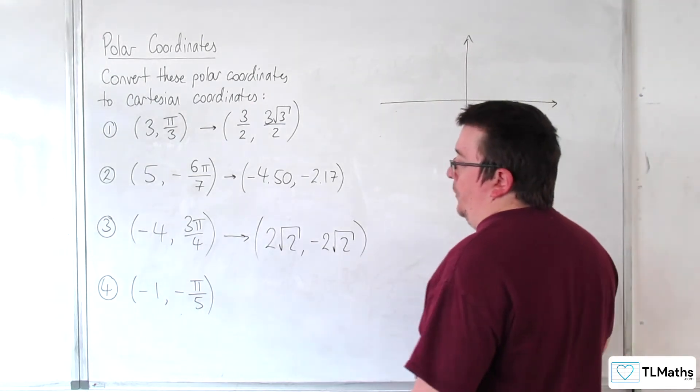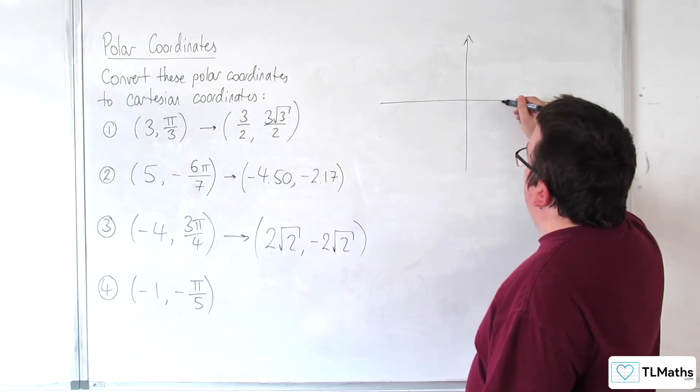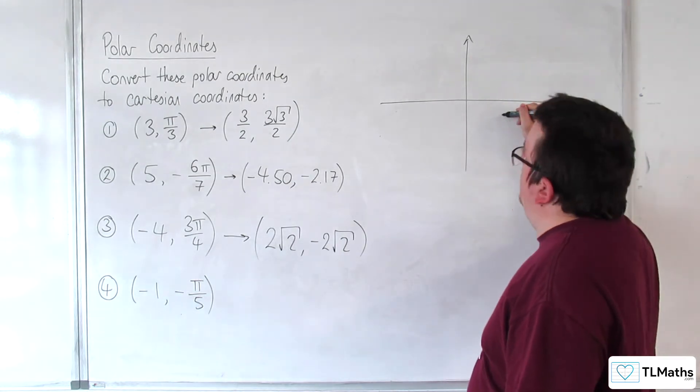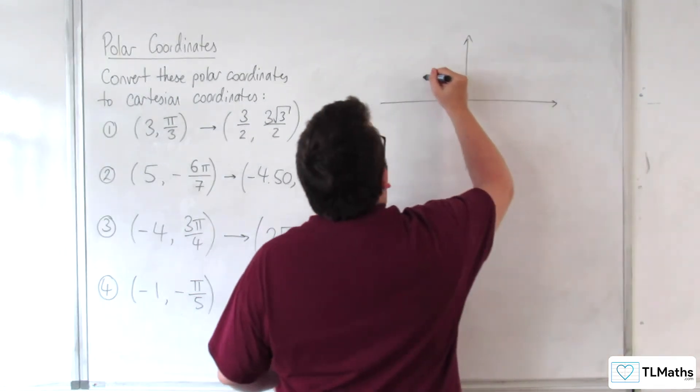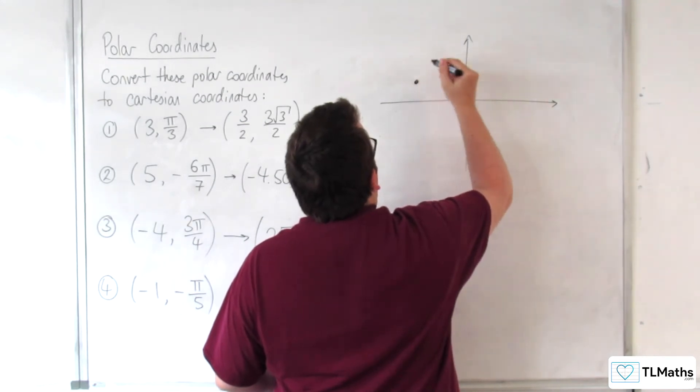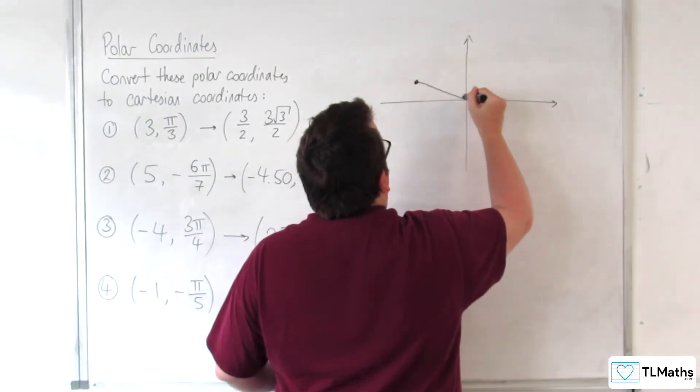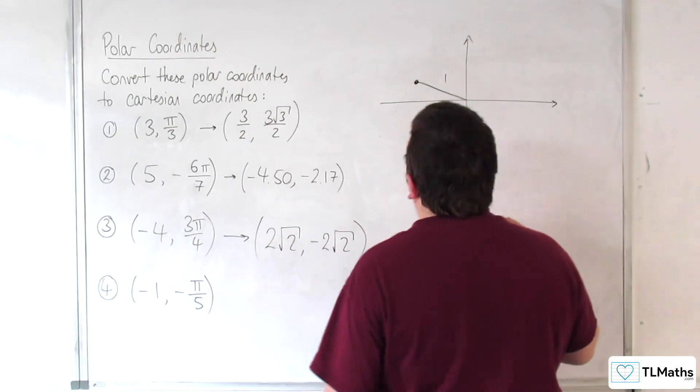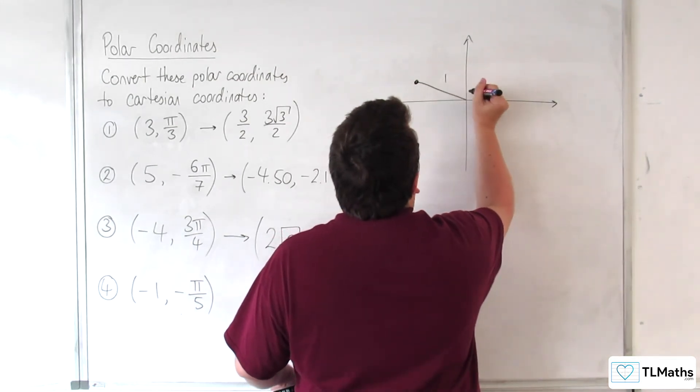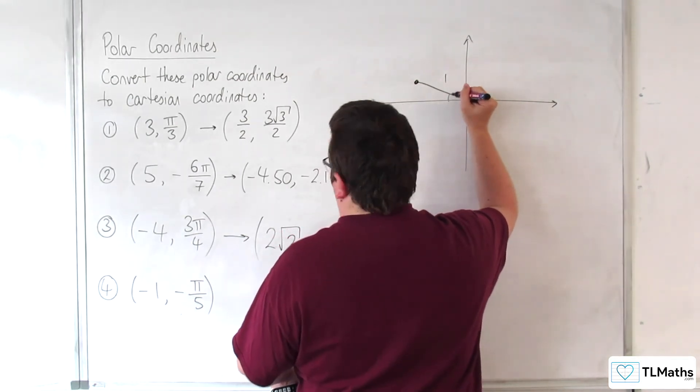Now, where's this going to be placed? So, minus pi over 5 is somewhere down here, but then we're minus 1, so it's going to be somewhere over here. So, that's of distance 1. So, this distance is pi over 5.